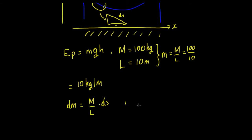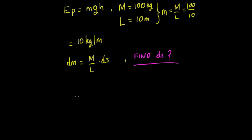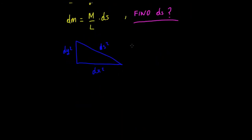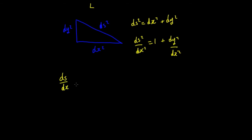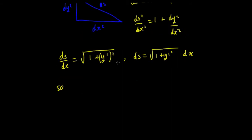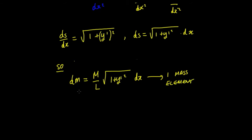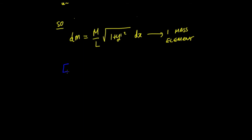We can write dm equals m upon l times ds. To find ds, we take our little triangle and use Pythagoras' theorem: ds squared equals dx squared plus dy squared. Dividing through by dx squared gives 1 plus (dy/dx) squared, and taking the square root of both sides gives the root of 1 plus y-derivative squared. Taking dx across gives ds equals the root of (1 plus y′²) times dx. So dm equals m/l times the root of (1 plus y′²) times dx.